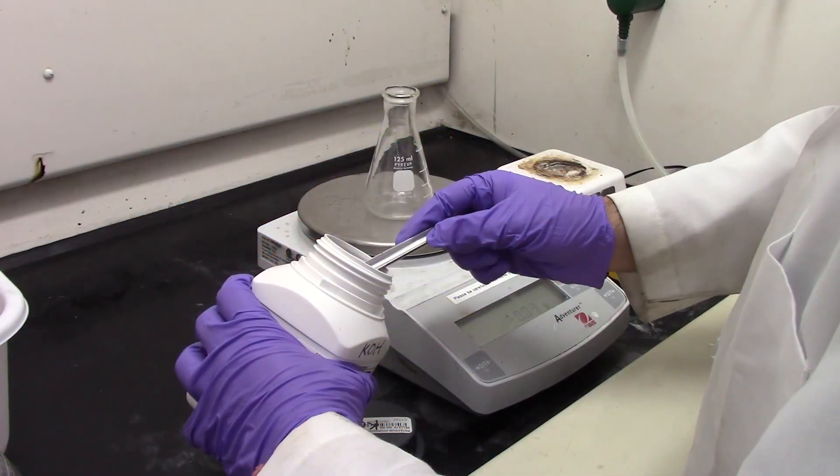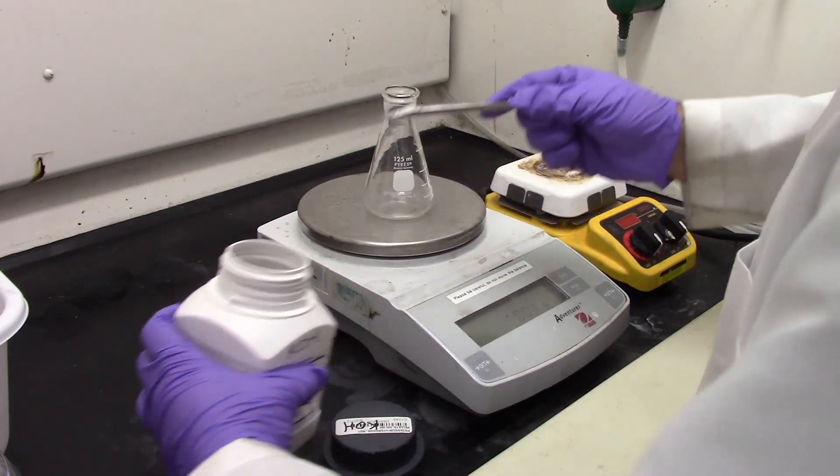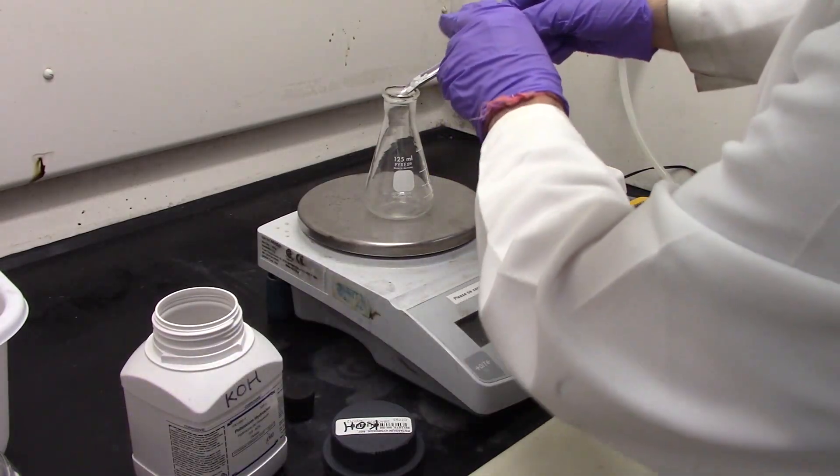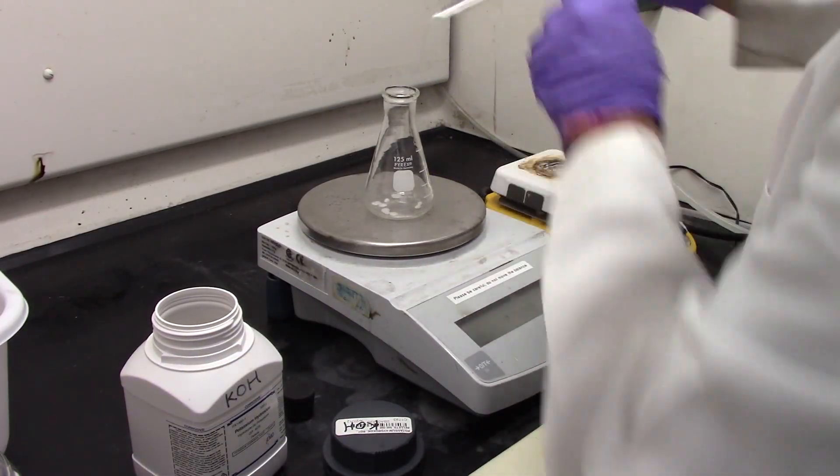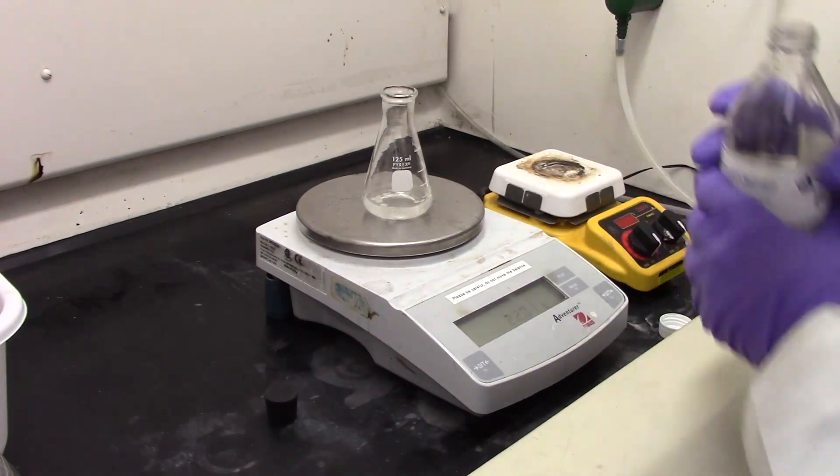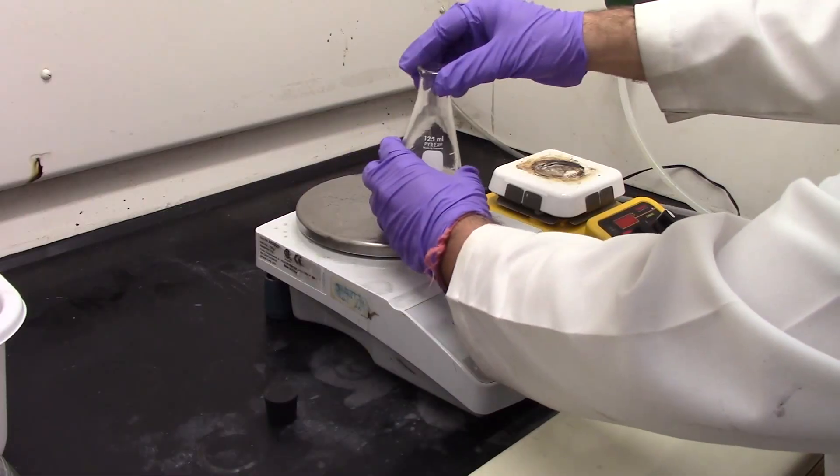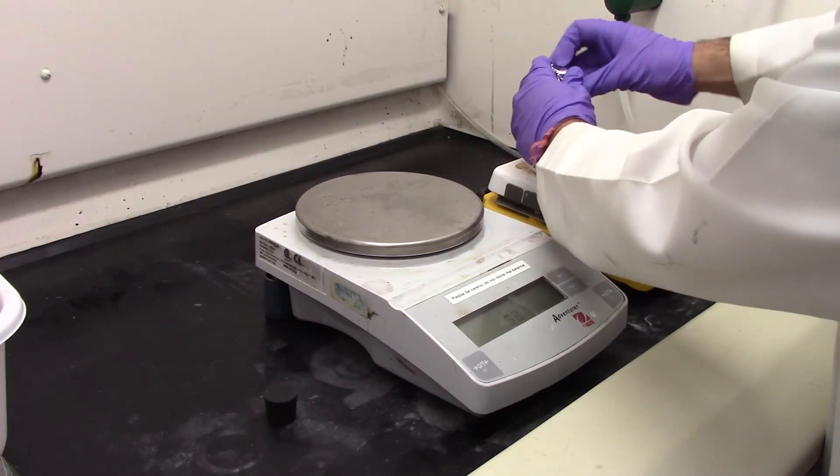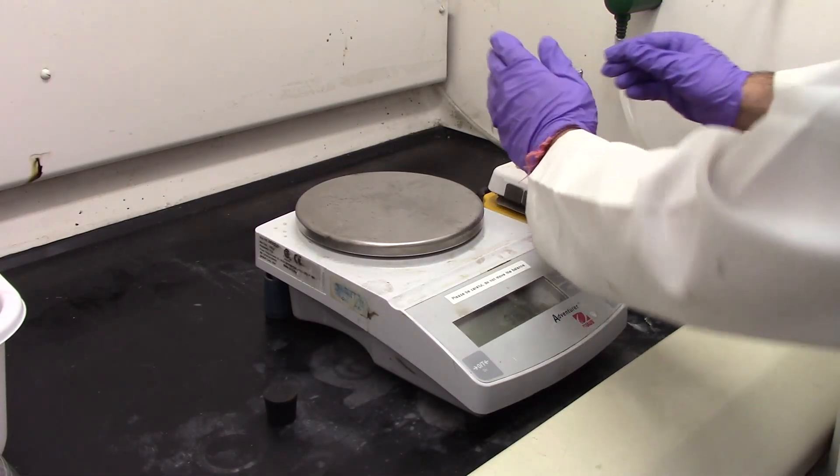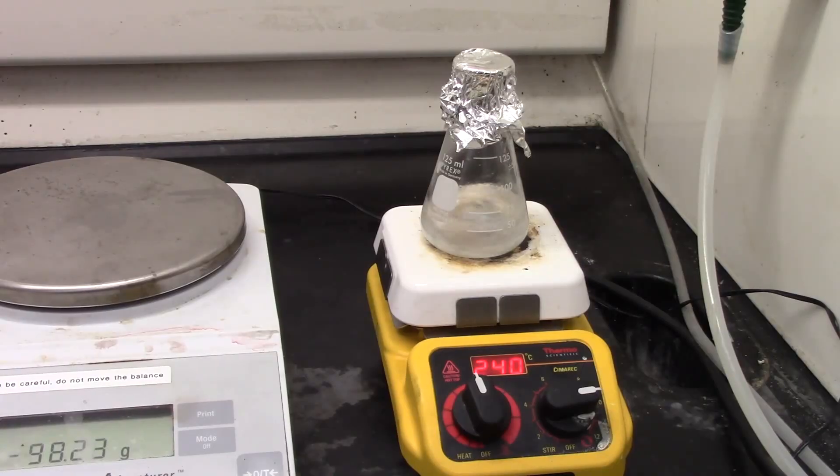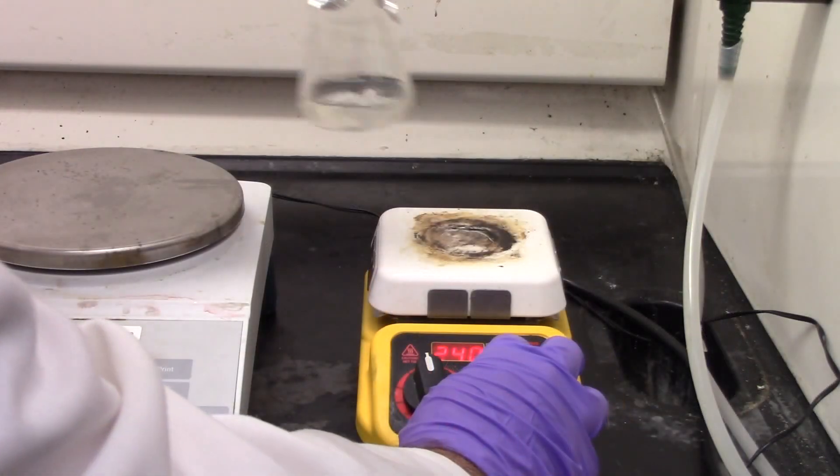Following safe lab procedures carefully weigh out 1 gram of potassium hydroxide into a 125 mL Erlenmeyer flask. Into this same flask add the amount of ethanol you calculated. Add a stir bar, cover with aluminum foil, and place on a stirring hot plate. Mix until the potassium hydroxide is completely dissolved. Set this aside.